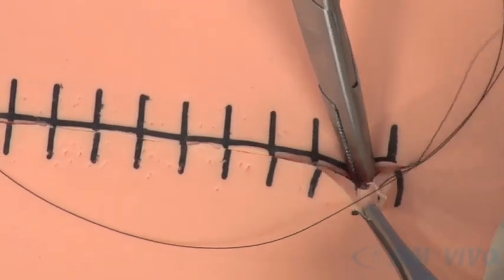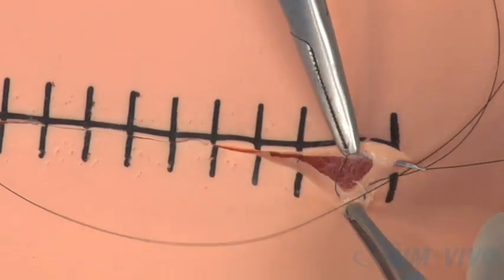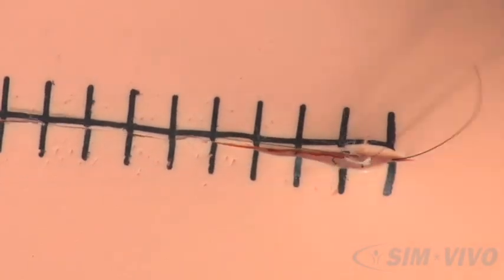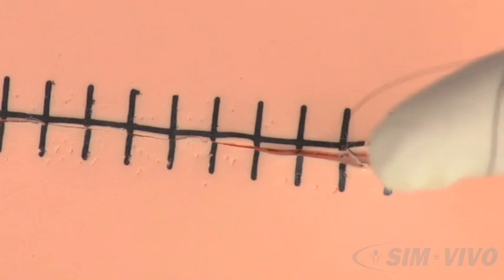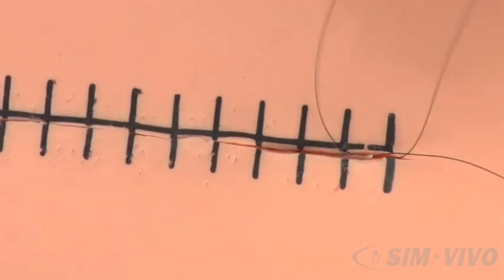Expose the apex and pass the needle through the edge of the skin at the apex and exit deep in subcutaneous tissue. As you pull it through, leave a short loop which will be used for tying.